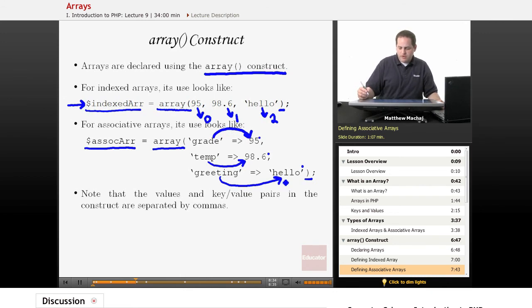And it's important to note that the commas in these lists are very important because it lets PHP know when you've finished defining one key value pair in an array versus another.